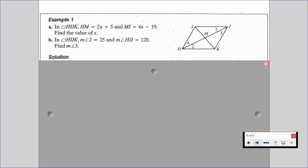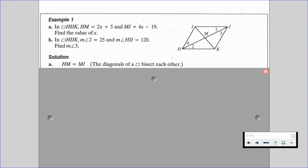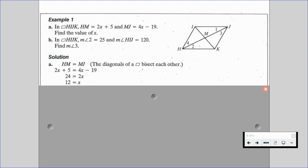So let's go through part A first. So the solution for part A is we're going to know that the length of HM is equal to length of MJ since the diagonals of a parallelogram bisect each other. Once we know that, we can substitute in our values. We end up with 2X plus 5 is equal to 4X minus 19. And we solve for X, and we get the value of X being 12.